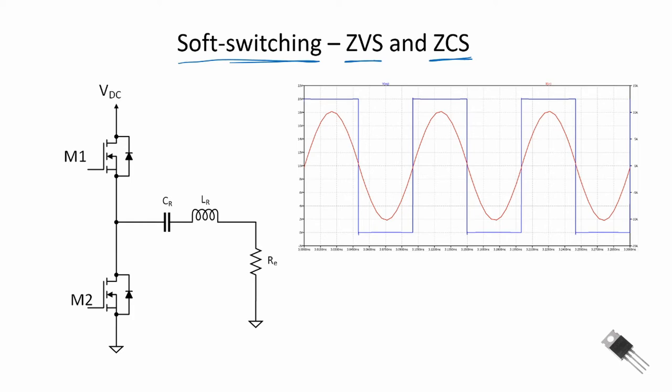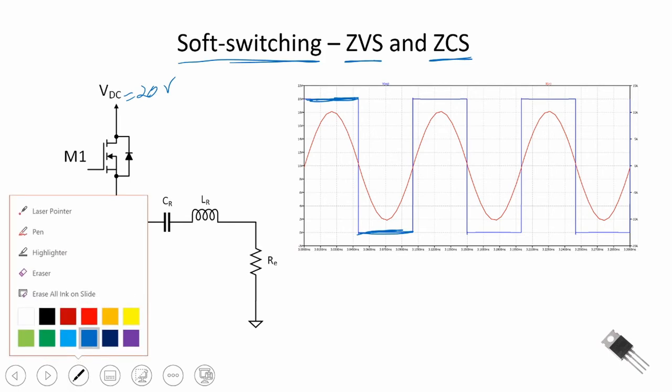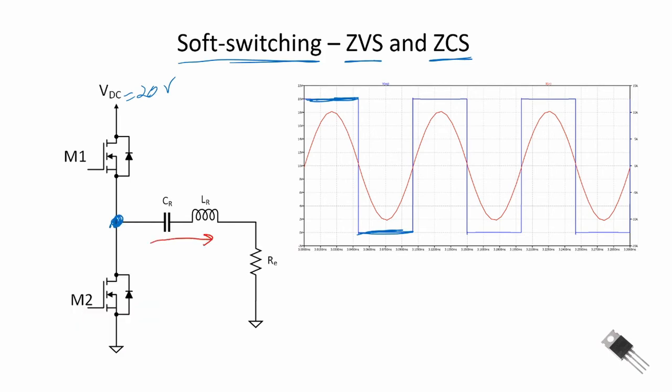So here we show our switching arrangement, and this blue line is the output at this node. We have a 20 volt source and we see we are switching between 20 volts and zero volts. The red line is the current through our load. And we see that that current I is sinusoidal in nature. We also see that we are switching M1 to M2 when the current is nearly zero.